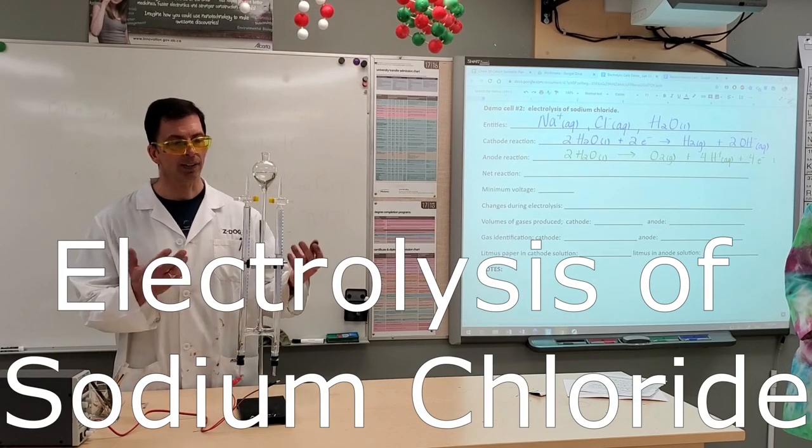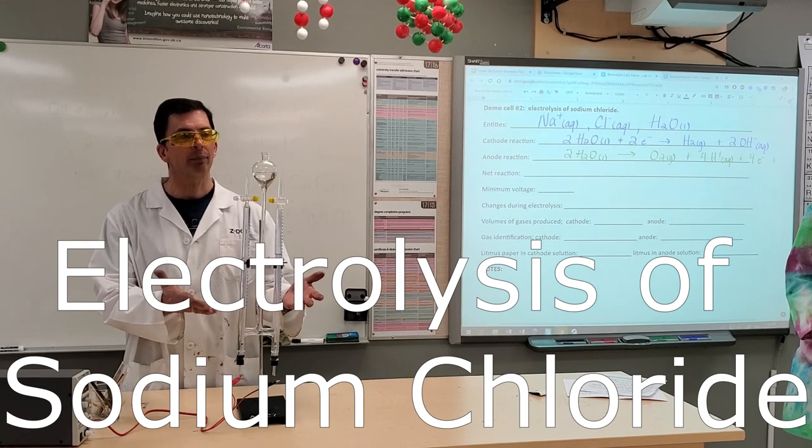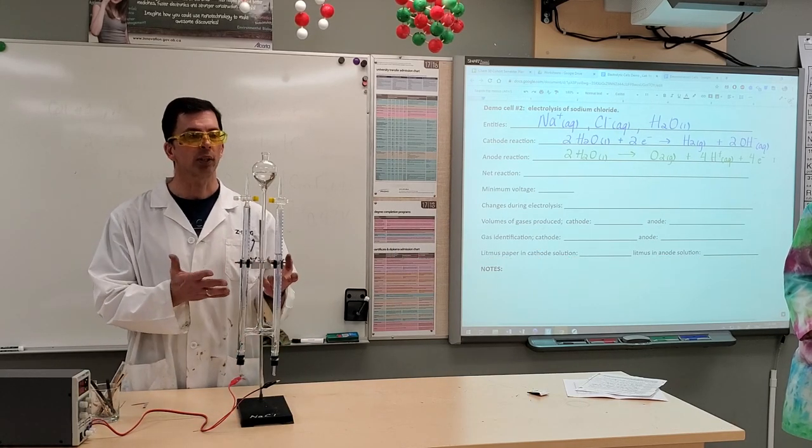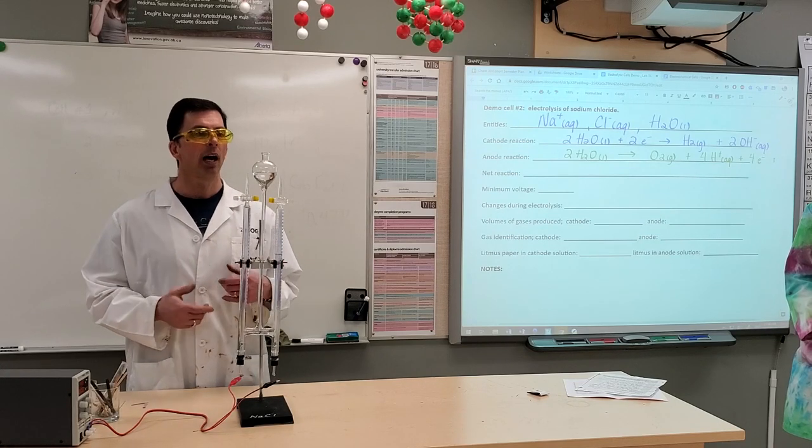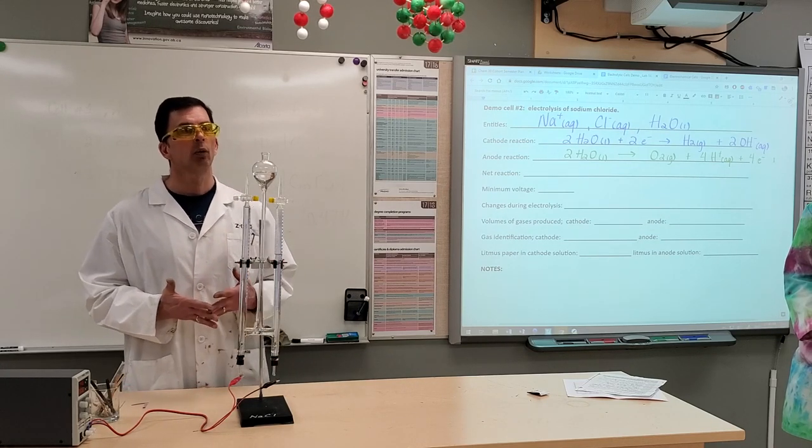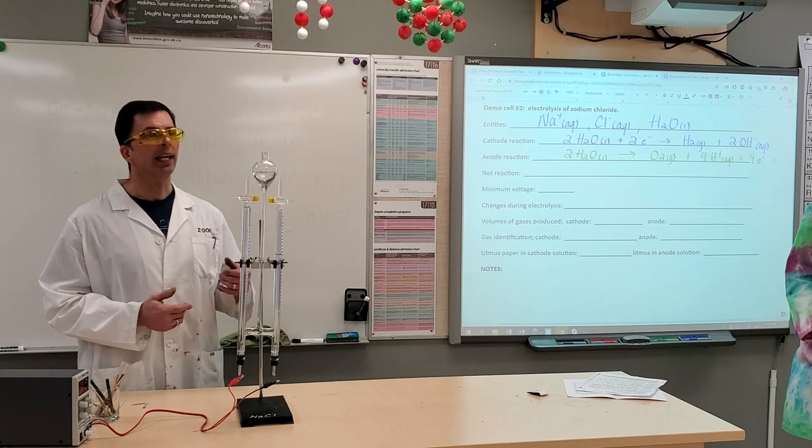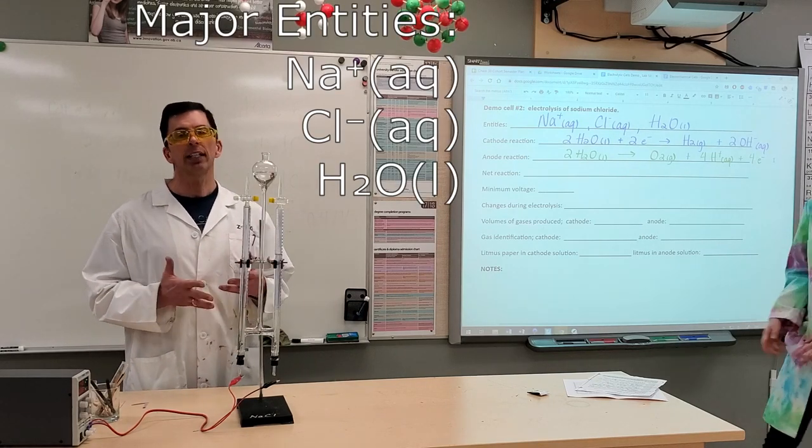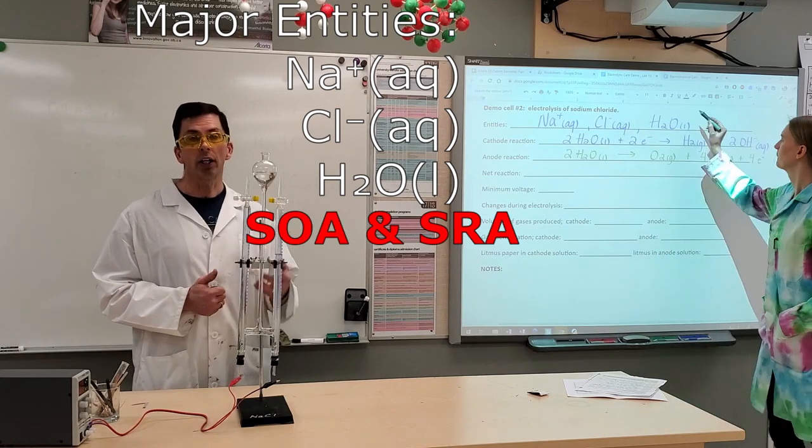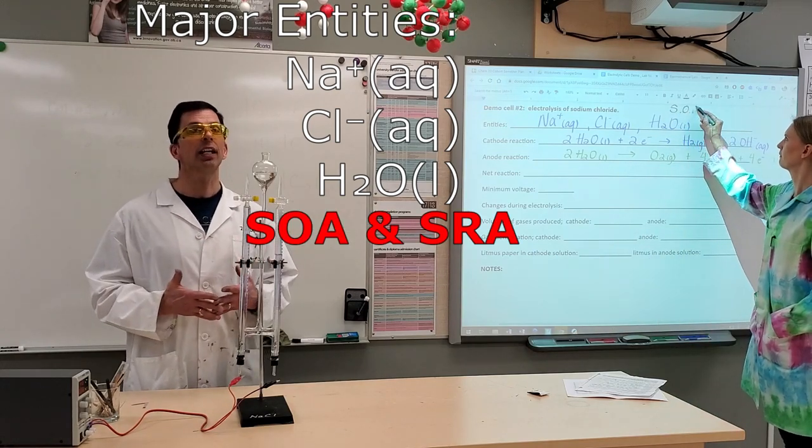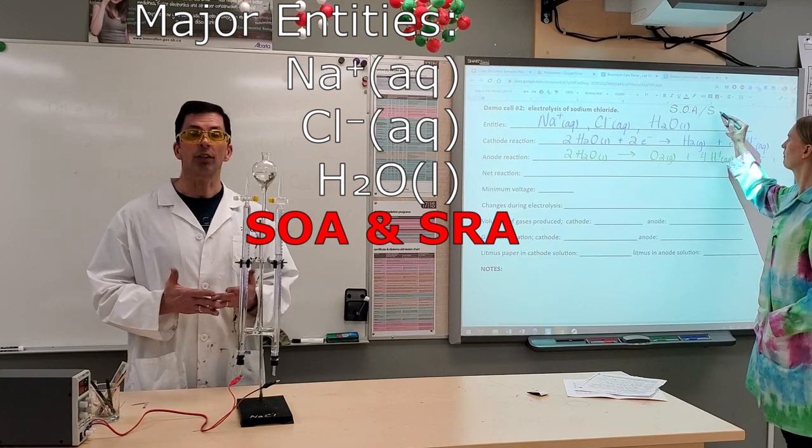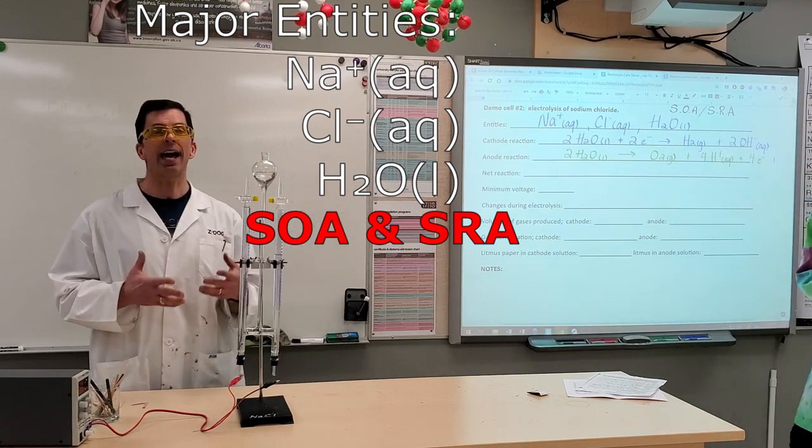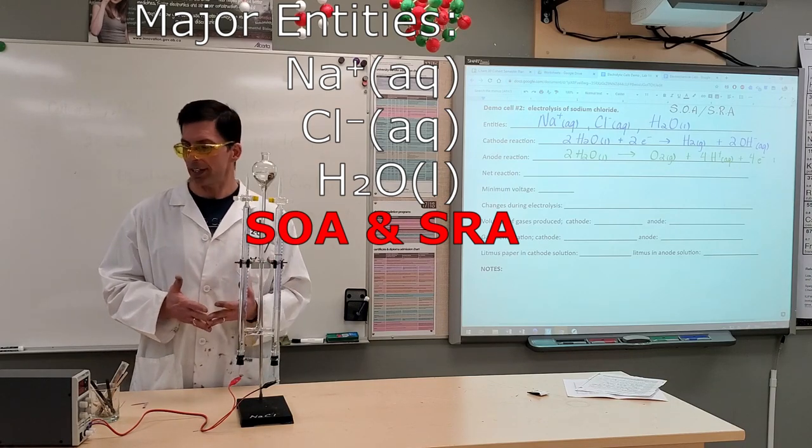And next we have the same apparatus, the Hoffman's apparatus. Although now we have sodium chloride, aqueous sodium chloride into our cell. Looking at our data book, we find that once again, we have sodium ions, chloride ions in water. And looking into your data book, you find that water is again, both the strong oxidizing agent and the strong reducing agent. So we get the exact same half-reactions that we had for the sodium sulfate cell.